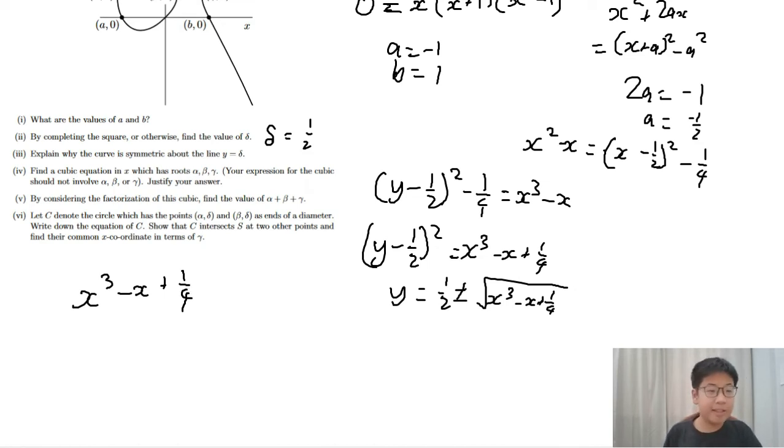When expanding the right-hand side, the coefficient of x squared equals minus alpha plus beta plus gamma. Because if we calculate x minus alpha, x minus beta, x minus gamma, and compare the coefficients, we will have alpha, beta, and gamma as our coefficients of x squared. So minus alpha plus beta plus gamma equals 0. And so we can take off the minus sign to get alpha plus beta plus gamma equals 0.